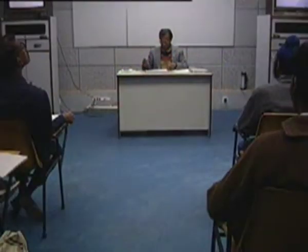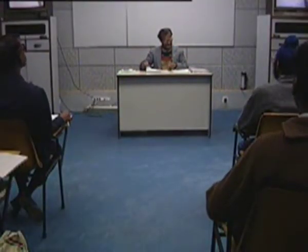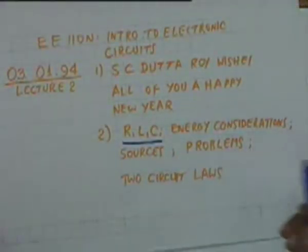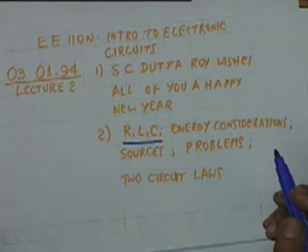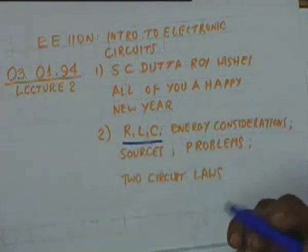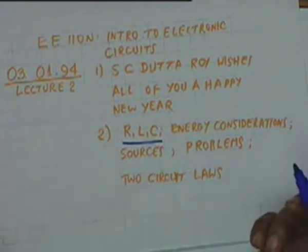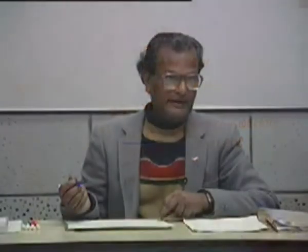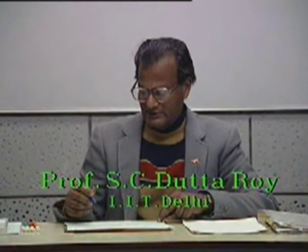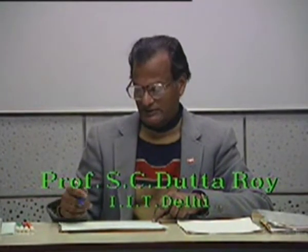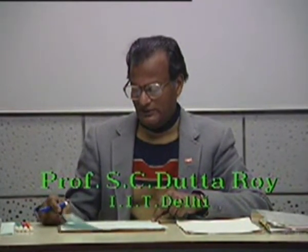First, we wish all of you a happy new year. Second, we want to talk about the three basic components: resistance, inductance, and capacitance, and energy considerations in them. Then we want to talk about sources—current and voltage—and work out a couple of problems. If time permits, we wish to enunciate two circuit laws. This would be the scope of today's lecture.